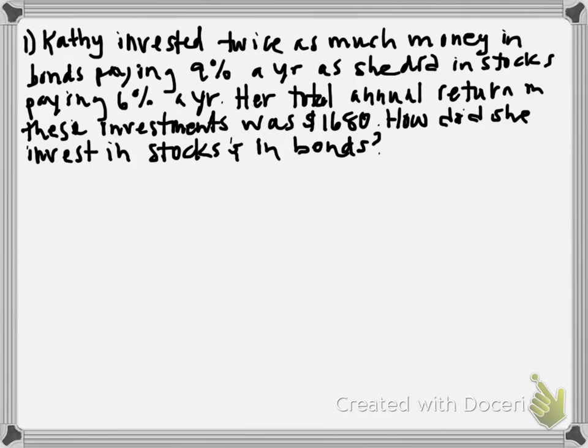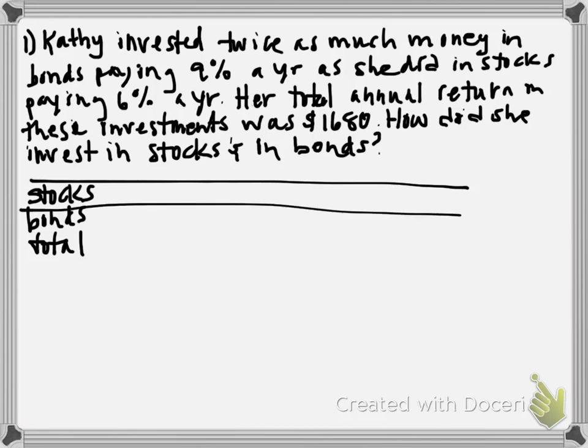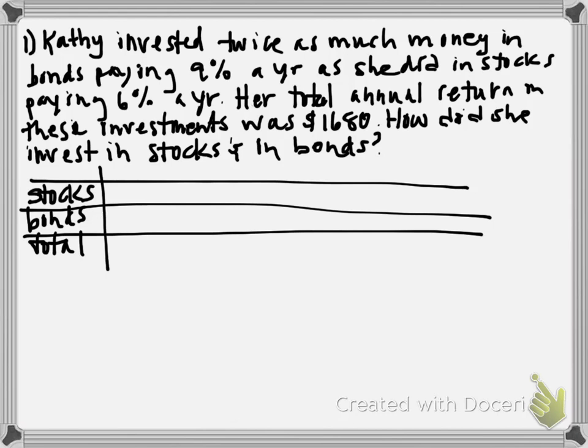Because there are so many things we're dealing with, and we're dealing with a formula, the best way to approach this problem is to have a chart. We've got stocks, we've got bonds, and we're going to add another column called total. We don't always get to put things in the total column, but when we do, we get an equation. We're going to write the formula P (amount invested), R (the rate), T (the time), and that's going to equal interest. We're going to multiply these columns together to equal the last column.